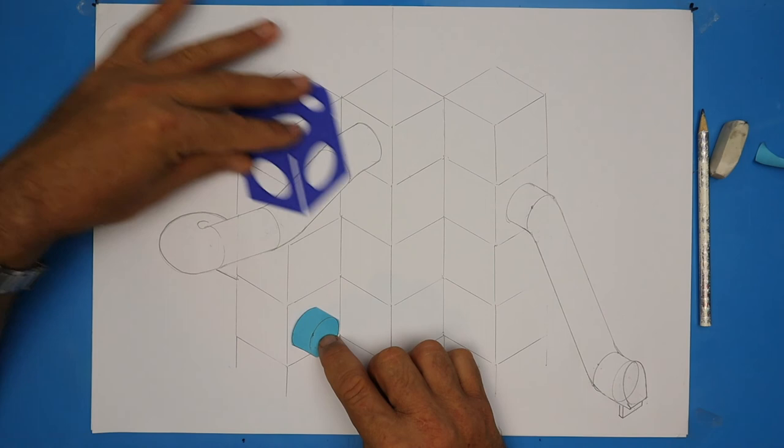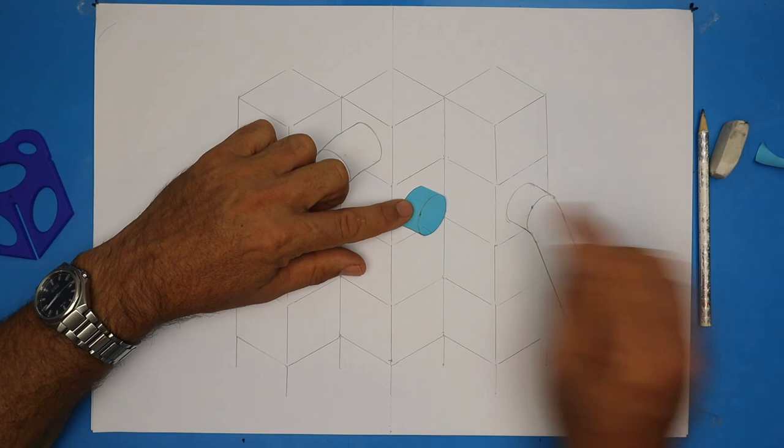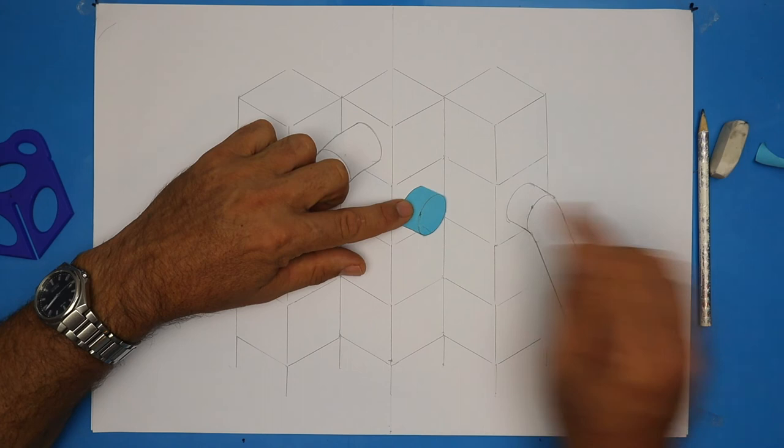Once you learn the rules of how to construct these isometric drawings, you can draw anything. I could have the slide popping out on one of these sides, or even up here. What a shock that'd be. I think we'd need to design a pool or a trampoline at the bottom there. How cool. Now that you've finished drawing the core structure, pop over to video two, and let's get started on the design detail.